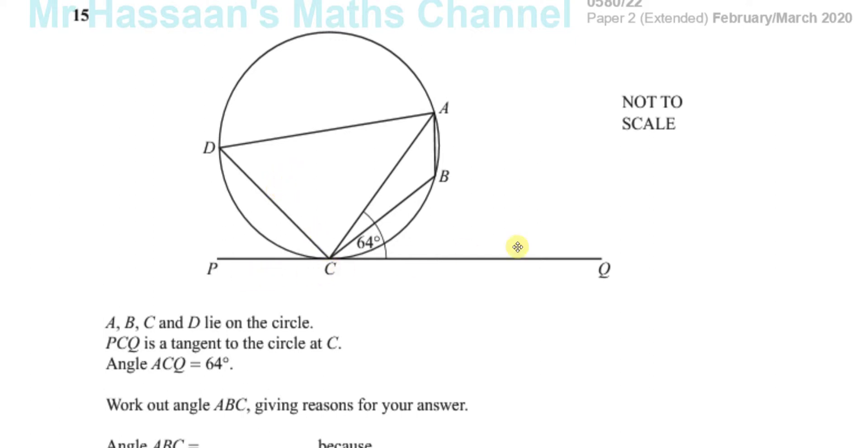P, C, Q is a tangent to the circle. Then the tangent to the circle meets the radius at 90 degrees. The radius isn't drawn here. Anyway, angle ACQ is 64. So AC is a chord because A and C both are on the circumference of the circle.